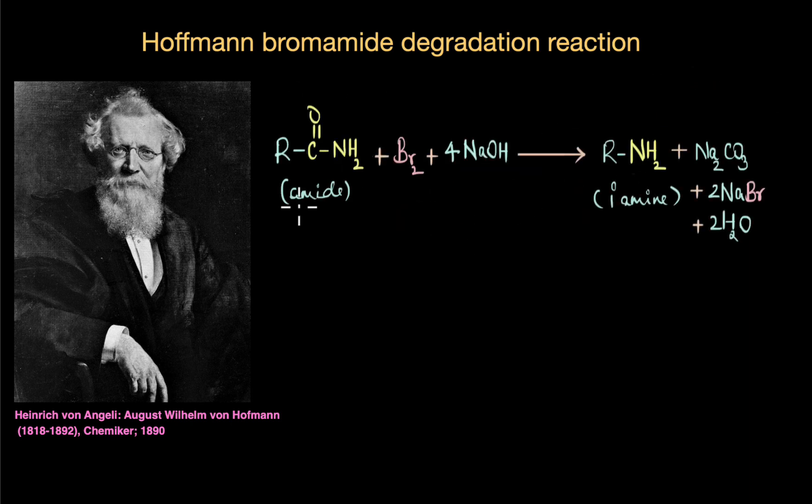This is the overview of Hoffmann bromamide degradation reaction. Our starting reactant is an amide, and when we treat this amide with bromine and a strong base like NaOH, aqueous or alcoholic, we get a primary amine with one carbon less than the starting reactant.